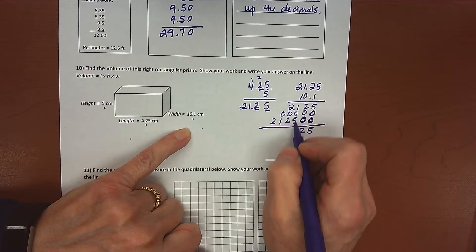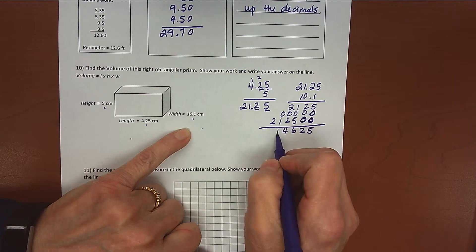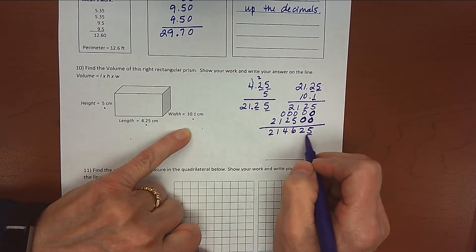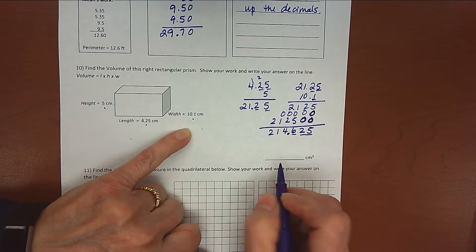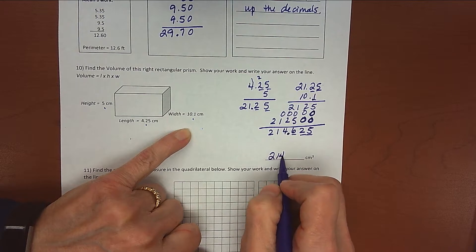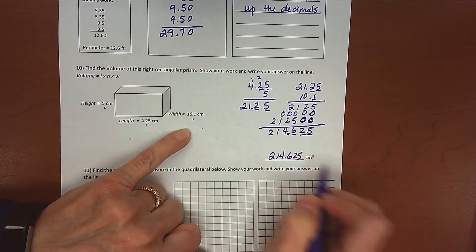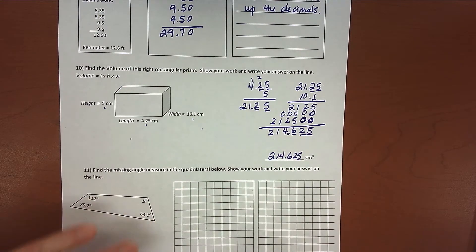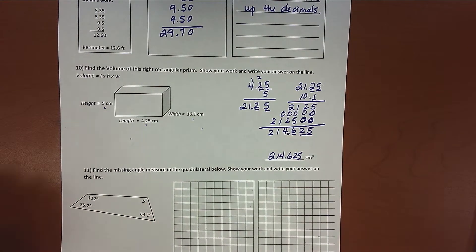5, 2, 6, 4, 1, 2. Place my decimal point. 1, 2, 3. 1, 2, 3. And my answer is 214 and 625 thousandths centimeters cubed. Nope, I did my decimal. 1, 2, 3, 1, 2, 3. Yep, we're good. All right.